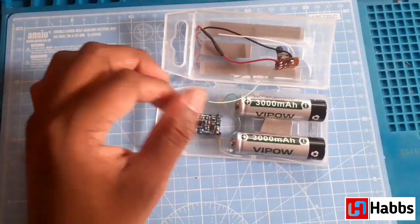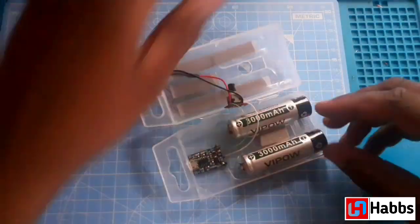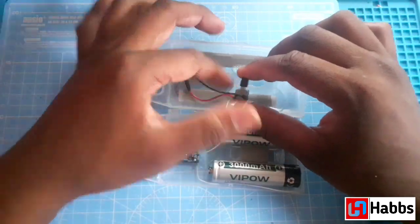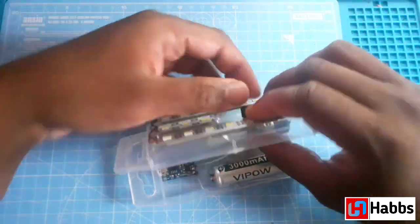Next we will connect the positive terminal of switch to the positive terminal of charging module, and the negative terminal of the switch to the negative terminal of charging module. Now we finished all the wiring as per the circuit diagram.